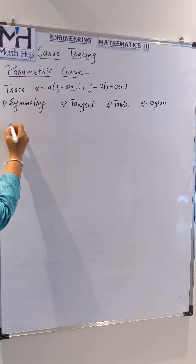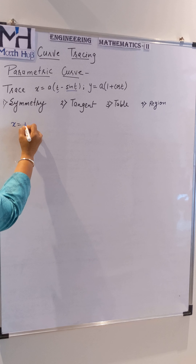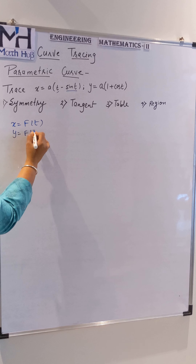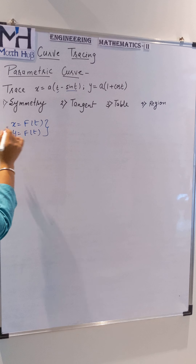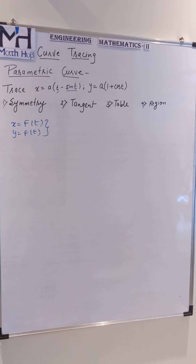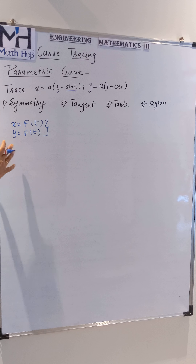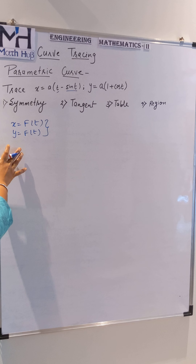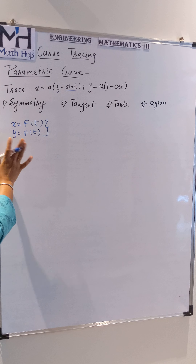Whenever x is given as a function of t and y is given as a function of t, then the equation is called a parametric equation — because when x and y both depend on a third variable t, we call that a parametric equation. And if we are tracing the curve for a parametric equation, we call it a parametric curve.